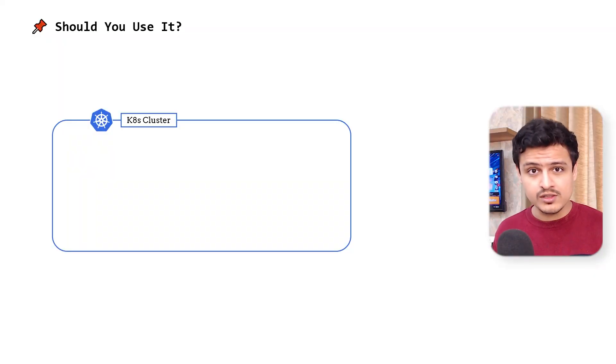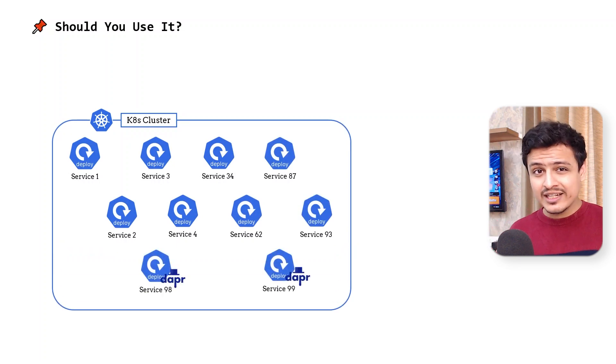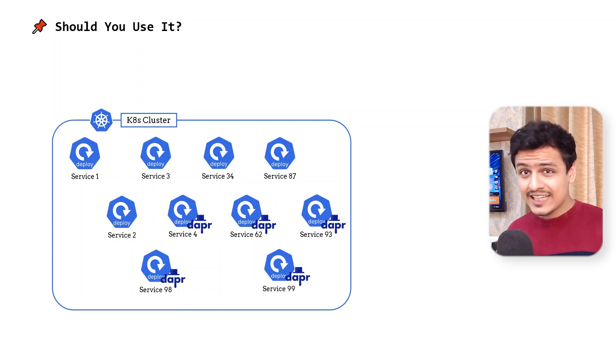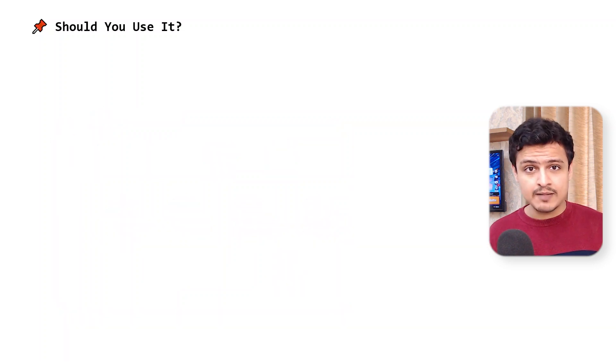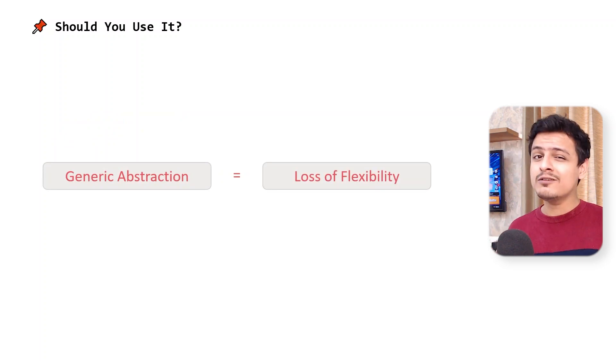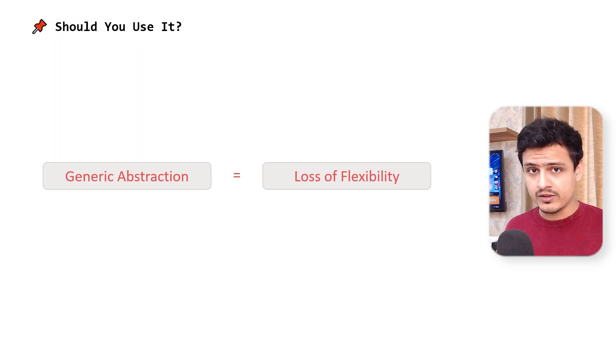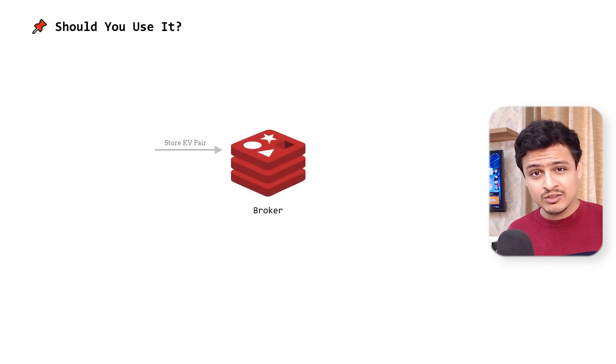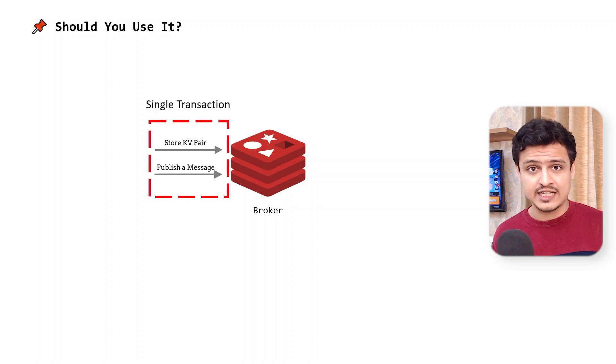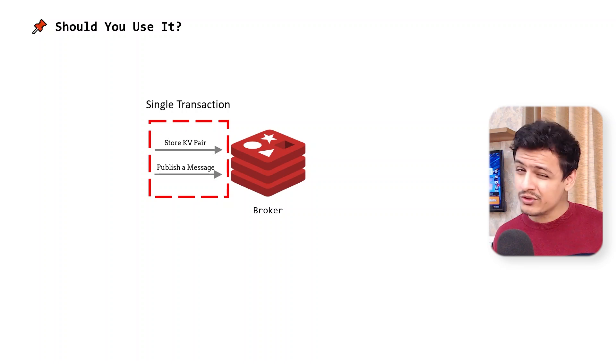Now comes the big question: should you use it? Hell yes — Dapr is absolutely amazing. Dapr does require you to make some changes in your application, but as we just saw, they're really tiny. Technically, you don't need to make any changes at all. You can start using Dapr for new features in your app and then incrementally adopt it once you're starting to see the value for yourself. The only complaint I have is that the generic abstraction it offers may dilute the individual characteristics of certain tools. For example, Redis can be used as a store and a pub-sub system, allowing you to store data and publish a message atomically in a single transaction — this just won't be possible when using Redis via Dapr. Having said that, these use cases are extremely rare. I strongly suggest you take Dapr for a spin — it's an amazing tool.